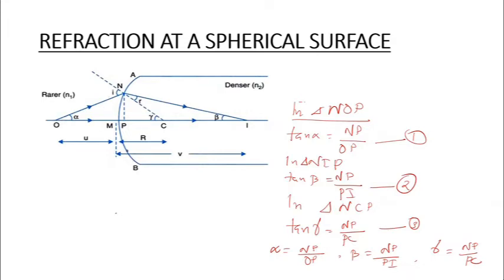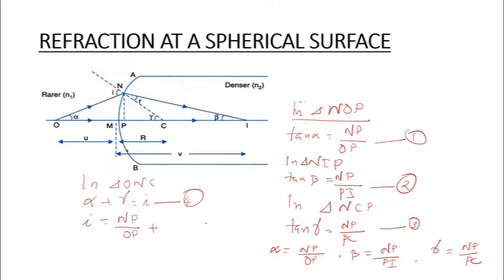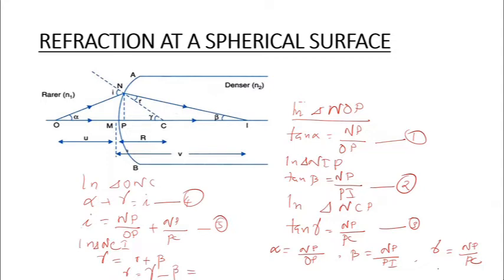In triangle ONC, the angle i is the exterior angle, so alpha plus gamma equals i. Therefore i equals NP/OP plus NP/PC. Similarly, in triangle NCI, gamma is the exterior angle, so gamma equals r plus beta, which means r equals gamma minus beta. That gives r equals NP/PC minus NP/PI. These are equations six and seven.